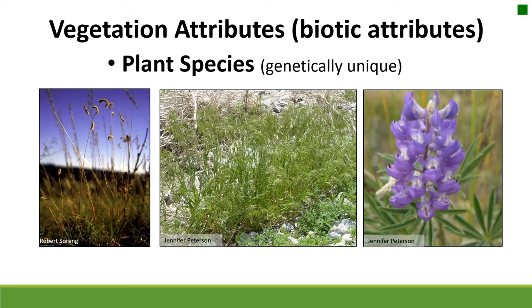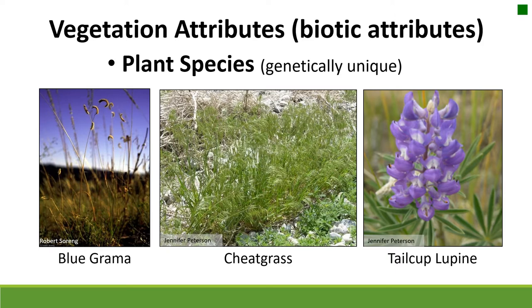We'll start with plant species. A plant species is just a genetically unique plant, and we have hundreds — maybe even thousands — of plant species on rangelands here in the West. These pictures show three plants you should have memorized for this class: blue grama, cheatgrass, and tailcup lupine. Each is its own plant species and could be a unit when measuring vegetation attributes on the range.